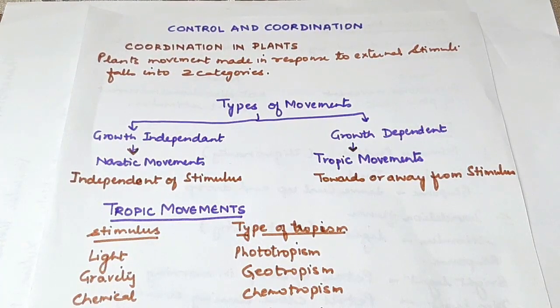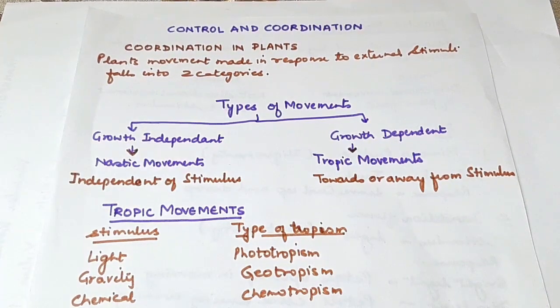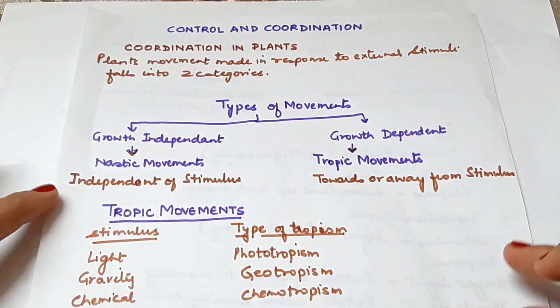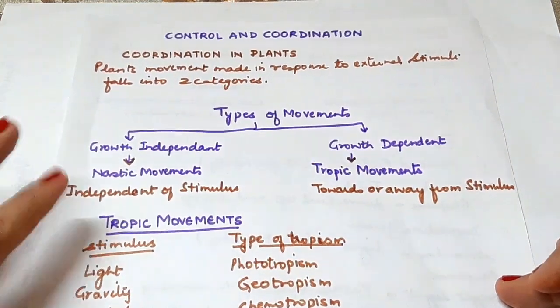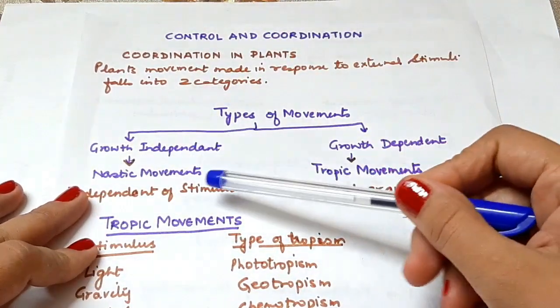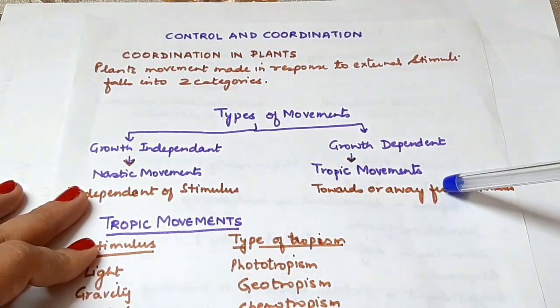Hello friends, welcome to Scholastic Classes. Today we are going to discuss control and coordination in plants. Plant movements in response to external stimuli are divided into two categories: nastic movements and trophic movements.